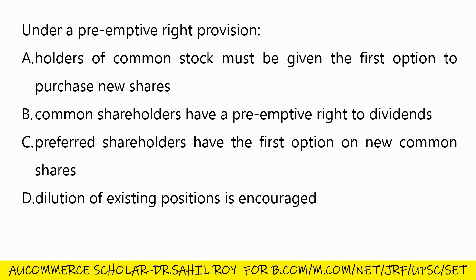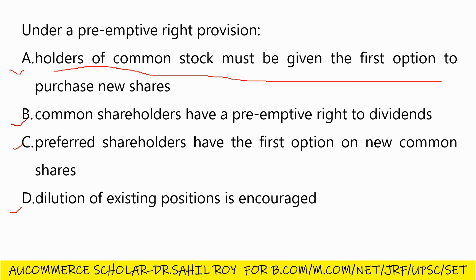Our last question: under a preemptive right provision — Option A: holders of common stock must be given the first option to purchase new shares; Option B: common shareholders have a preemptive right to dividends; Option C: preferred shareholders have the first option on new common shares; Option D: dilution of existing position is encouraged. The correct answer is Option A: holders of common stock must be given the first option to purchase new shares.